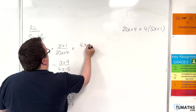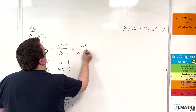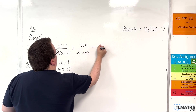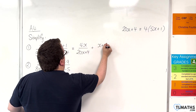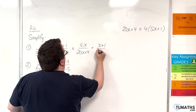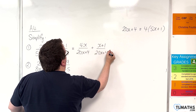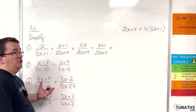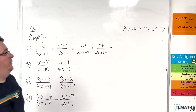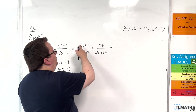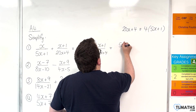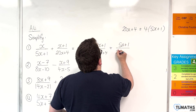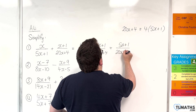So we get 4x over 20x plus 4, plus x plus 1 over 20x plus 4. Now just add the numerators, giving 5x plus 1 over 20x plus 4.